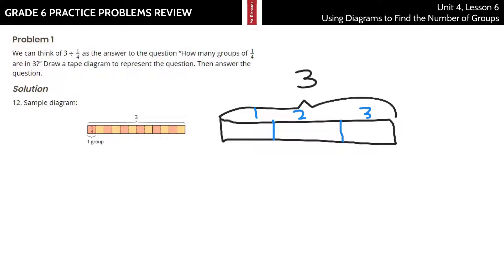Then, if I break each whole unit into 4ths — 1, 2, 3 is into 4ths; 1, 2, 3 is into 4ths; 1, 2, 3, that's into 4ths. And now, each one of these is 1/4.